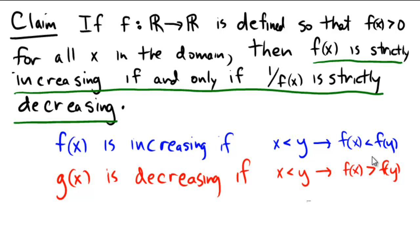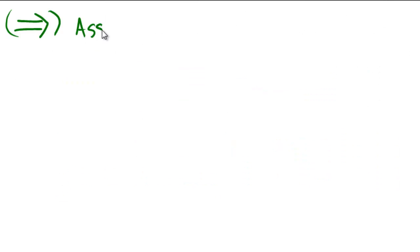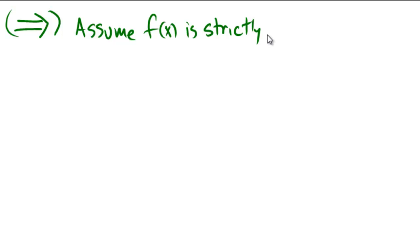Now, on to the proof. Remember as we go on to the proof, we're going to recall that f is defined and we're going to have only positive values for all of the x's in the domain. This is an if-and-only-if statement, so we're going to have to go two different directions. The first direction is: assume f of x is strictly increasing, and then show that 1 over f of x is strictly decreasing.